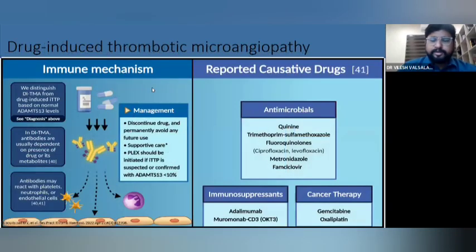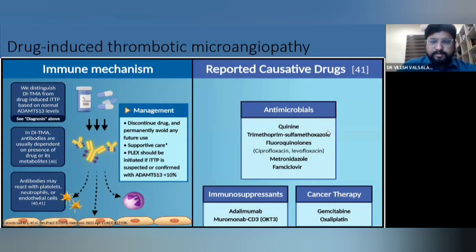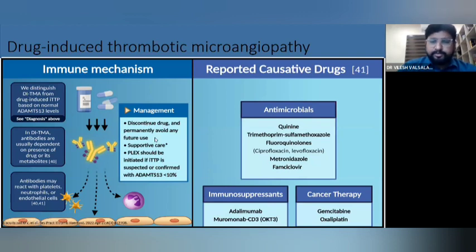Immune-based drug-induced TMA is distinguished from drug-induced TTP by normal ADAMTS13 levels, and antibodies are usually dependent on the presence of the drug or its metabolites. Drugs include quinine, trimethoprim, sulfamethoxazole, fluoroquinolones, metronidazole, famciclovir, immunosuppressants like adalimumab, and cancer treatments like gemcitabine and oxaliplatin. The main treatment is to discontinue the drug and permanently avoid it in future, unlike non-immune mechanisms. Supportive care and plasma exchange are initiated if TTP is suspected or confirmed with ADAMTS13 level less than 10%.